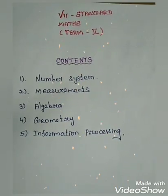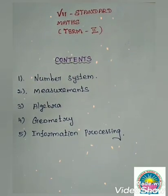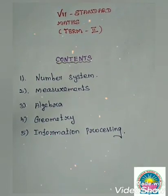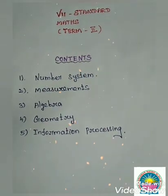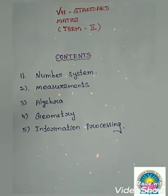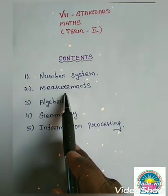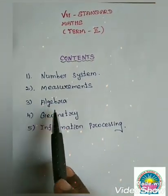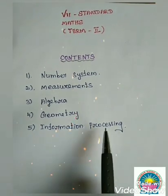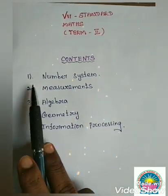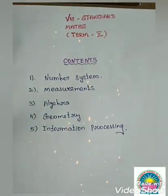Good morning to all. I hope you are all fine. In this video you are going to learn about 7th standard, Max Term 2. Totally we have five chapters: Chapter 1 Number System, Chapter 2 Measurement, Chapter 3 Algebra, Chapter 4 Geometry, Chapter 5 Information Processing. In this video you are going to learn about Chapter 1 Number System.